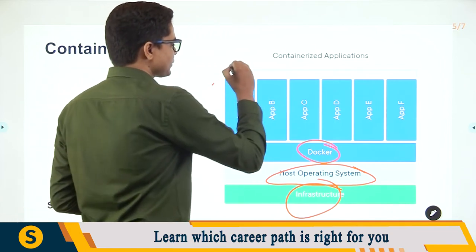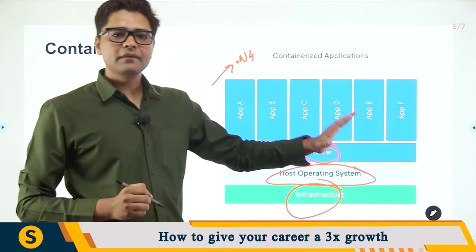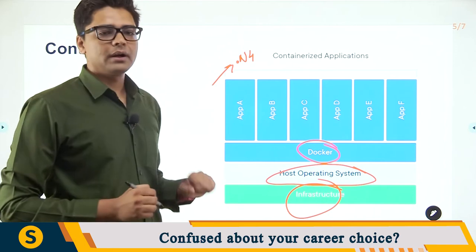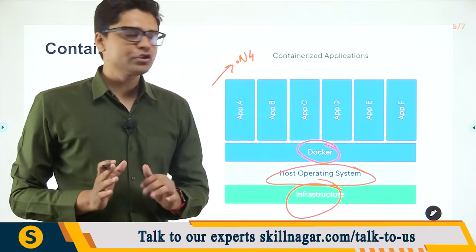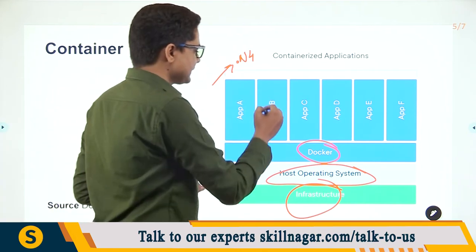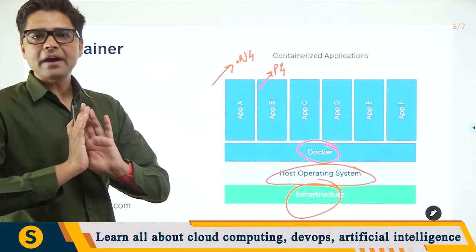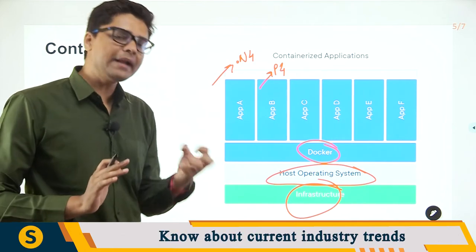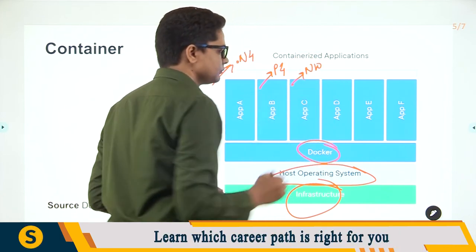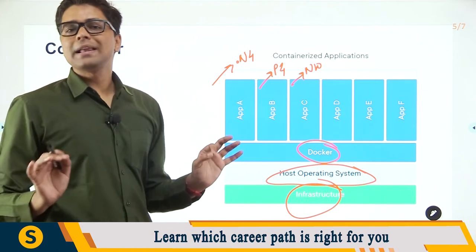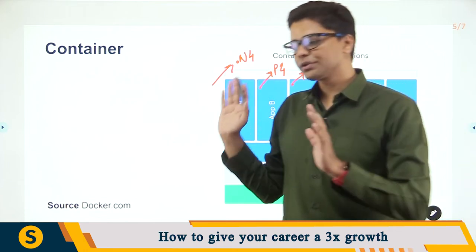Let's say Application A runs on .NET version 4 — it doesn't matter what operating system you're using; the Docker software will install all the required libraries to run .NET version 4. Application B runs on PHP version 4 — again, you don't need to install any special files, just the required files to run that platform. This version wants to run Node.js version 10 — same thing, you just install the required libraries to run Node.js version 10. That's it.